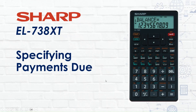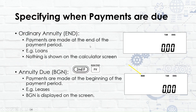This is video two and we're going to look at specifying payments due — essentially how we make payments, when they come off, and what we use them for. When looking at specifying payments due, we need to first consider whether they're an ordinary annuity or an annuity due.